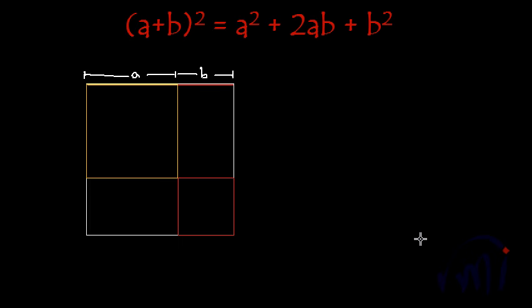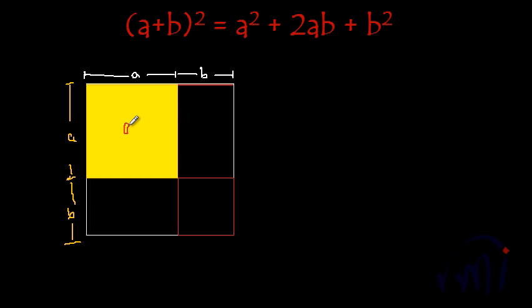So we have divided this bigger square, whose one side is equal to a plus b, into two squares and a few rectangles. Since this bigger square is of the length a plus b, this whole length will be equal to a plus b, out of which this much is a and the rest of it is equal to b. So this yellow is a square of area a square — each side of this square is equal to a, so its area will be a square.